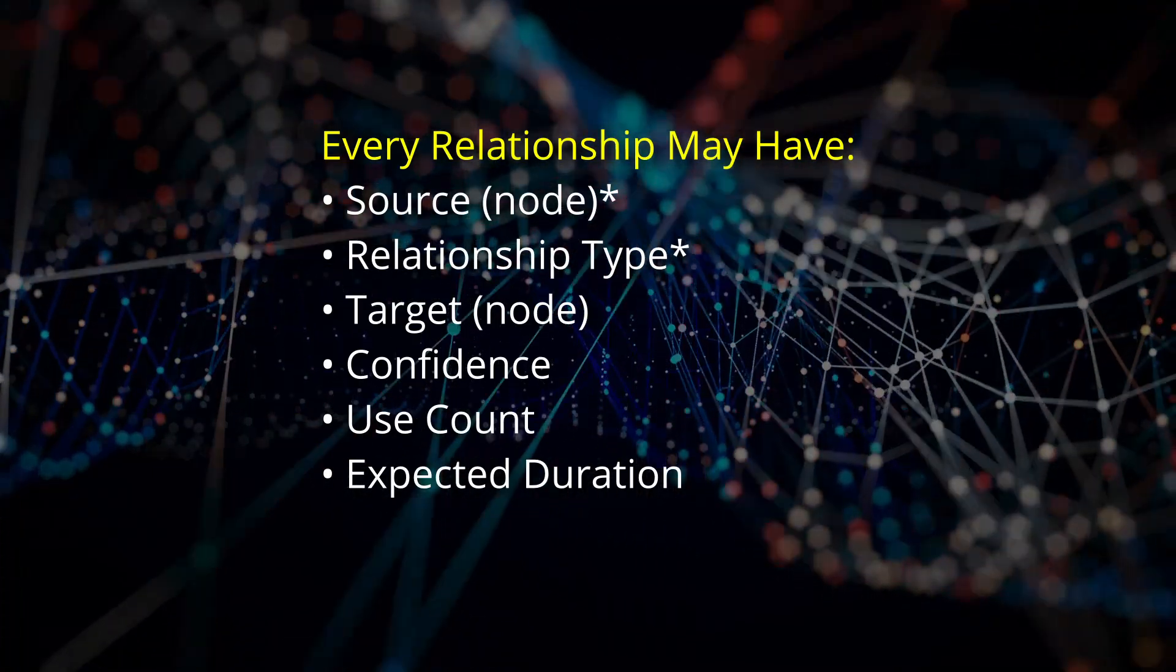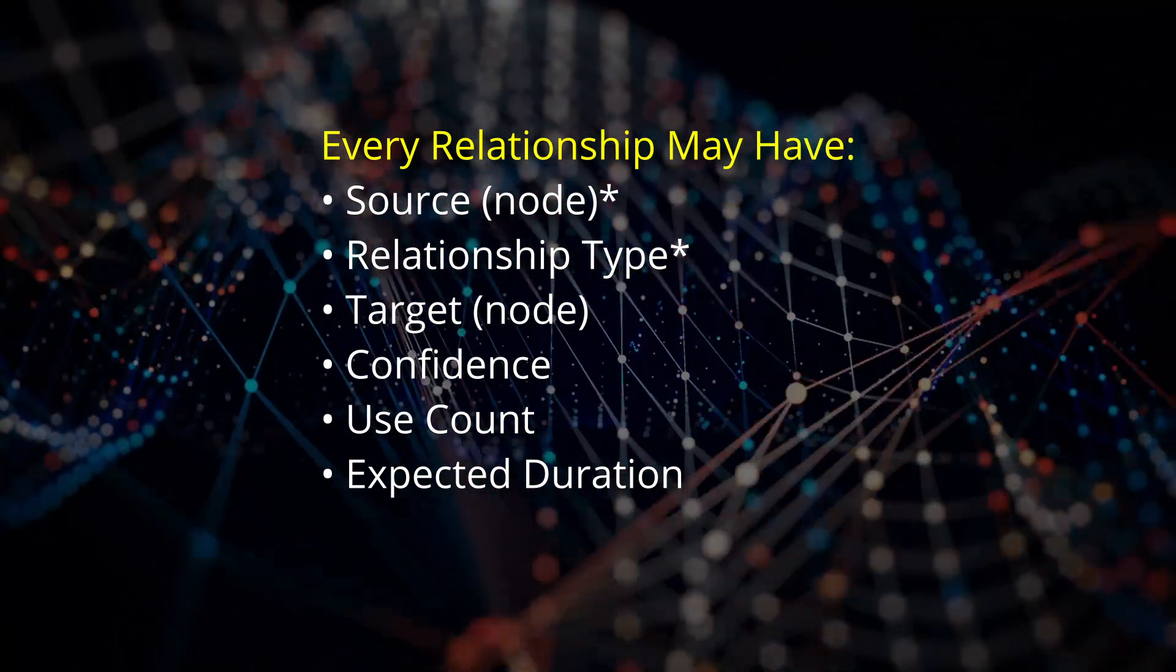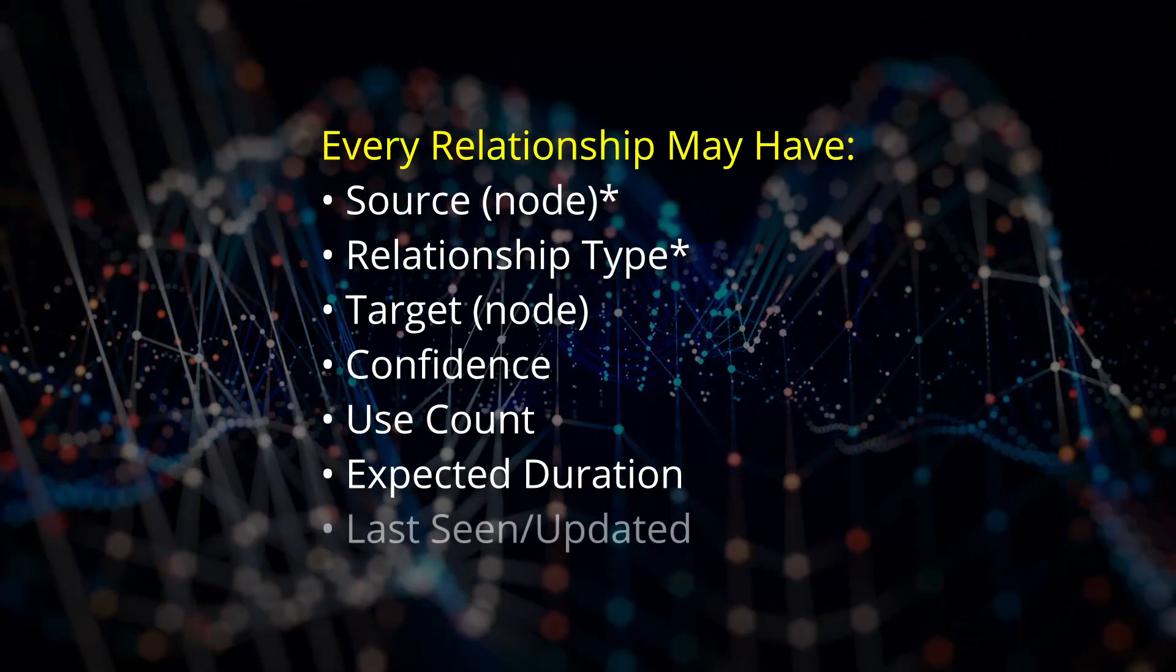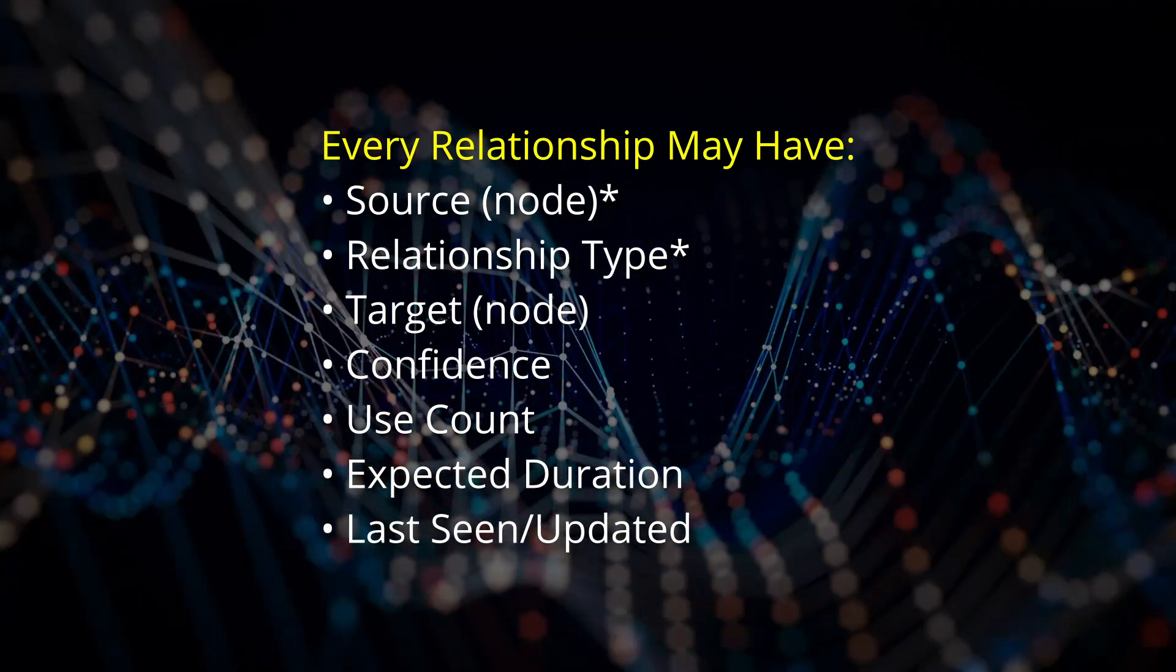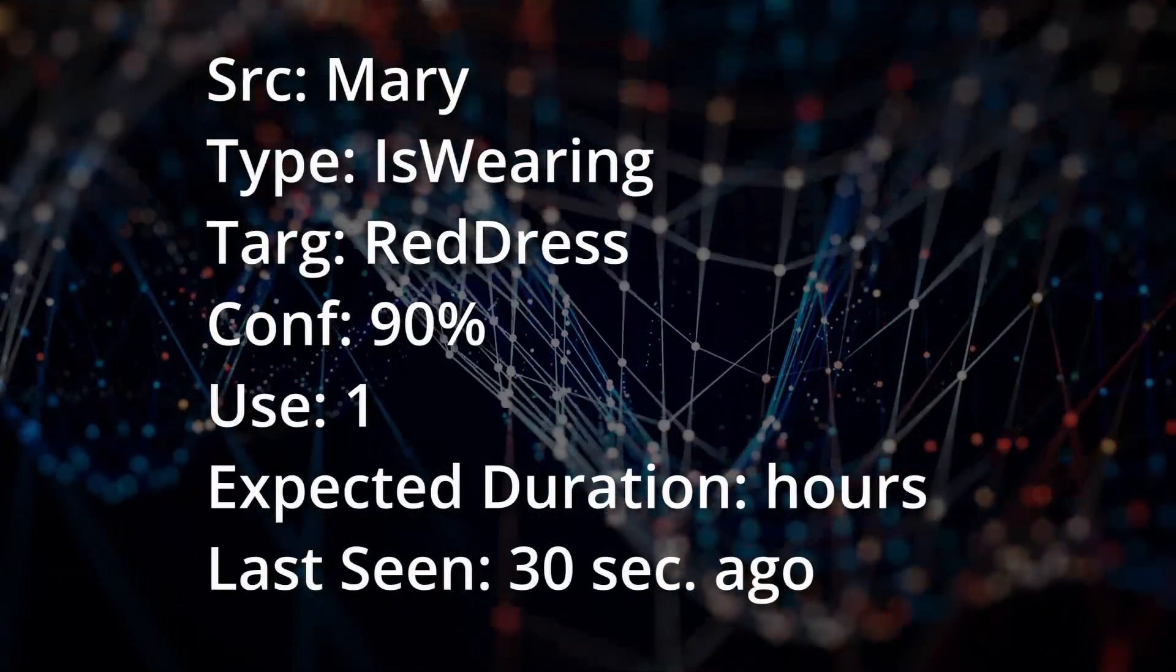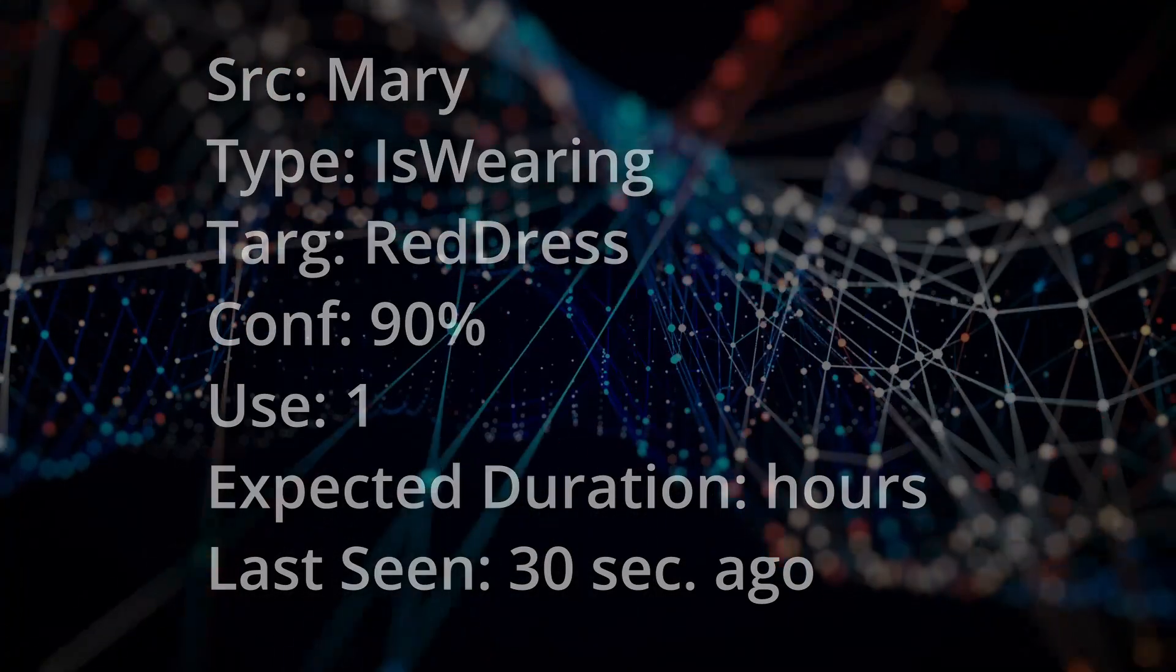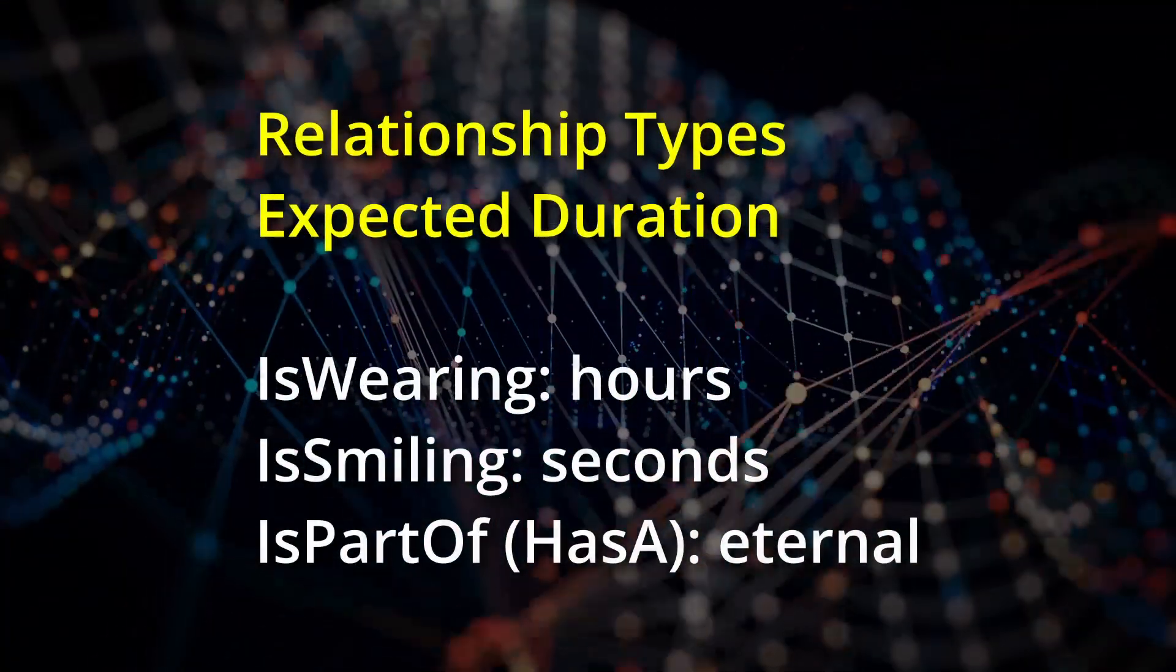So not only can each relationship have a confidence value and a use count, they can also have an expected duration value. And for an expected duration to be useful, you also need to keep track of when you believe the information was true. An is-wearing relationship might have an expected duration of hours, while is-smiling would have an expected duration of seconds.